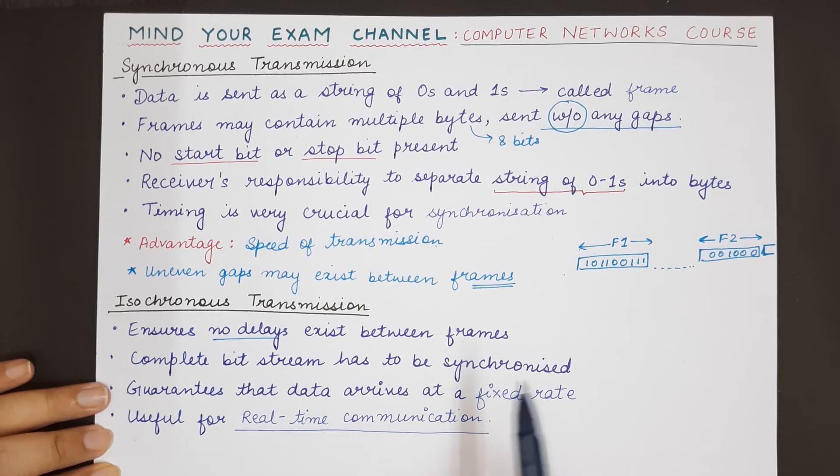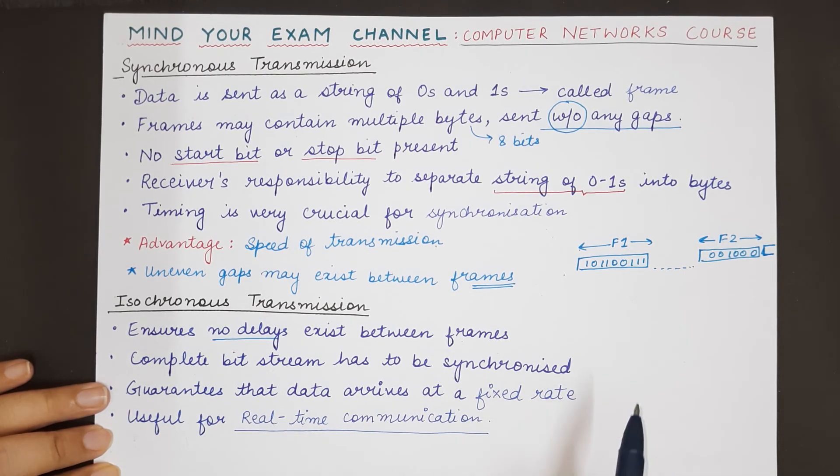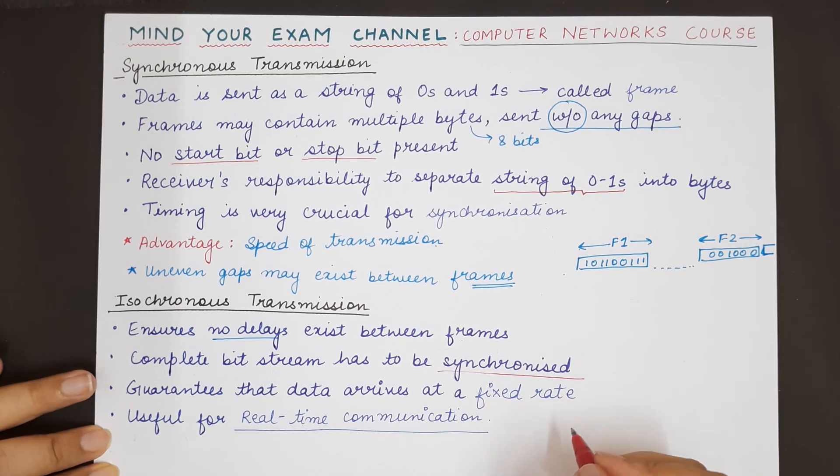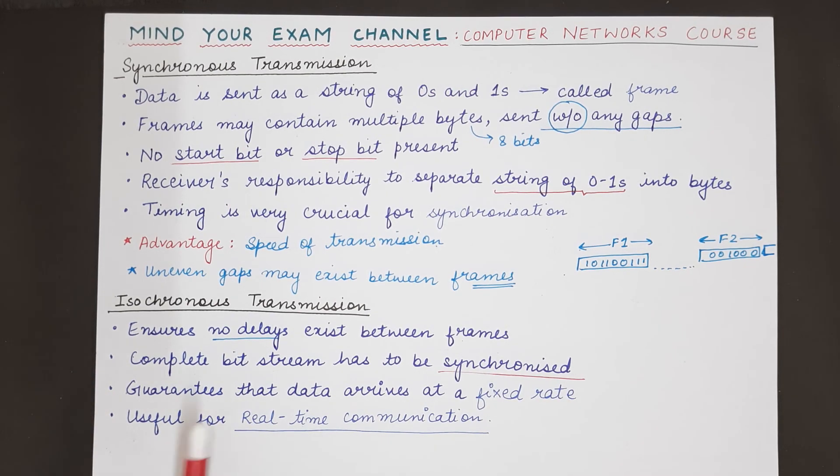Data keeps arriving at a fixed rate and the complete bit stream is synchronized. This is an important point to remember: isochronous transmission is useful for real-time communication.